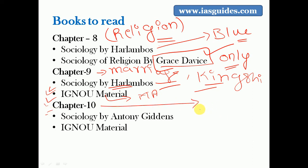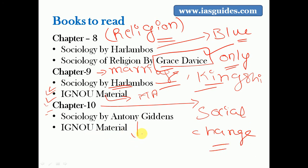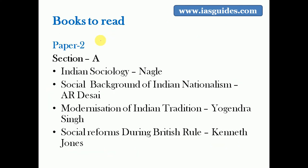The last chapter of paper one - chapter ten - deals with social change, a very important chapter. To study social change, refer to the Anthony Giddens book and pick up the relevant chapters from MA IGNOU material. That covers all of paper one.